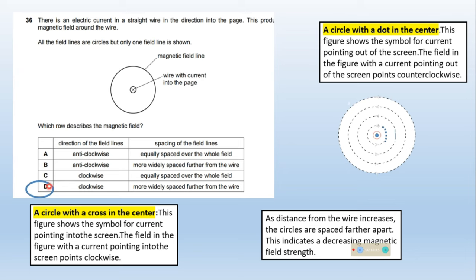Here in this case, the field with current pointing into the screen points clockwise. As distance from the wire increases, the circles are spaced further apart, indicating decreasing magnetic field strength. Option D, spacing of the field lines more widely spaced further from the wire, is correct.